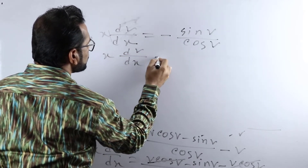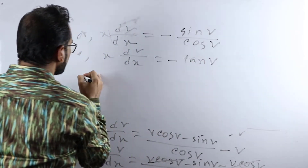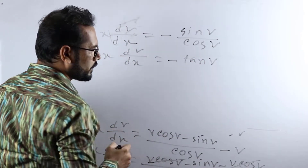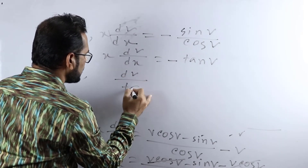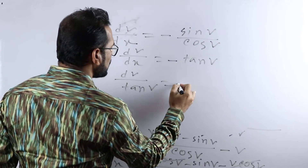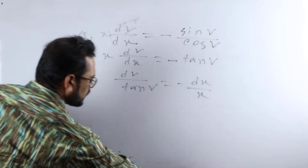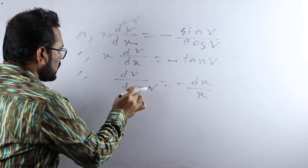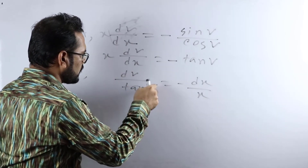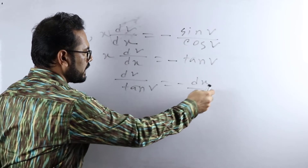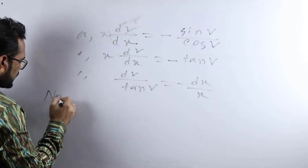So x dv/dx equals minus sin(v)/cos(v). Using cross multiplication, we can write dv divided by sin(v) equals minus dx divided by x. Looking at this carefully, it is clear that the variables are now separated — only v and dv appear on the left side, and only x and dx appear on the right side. We now integrate both sides.